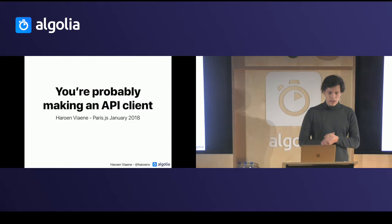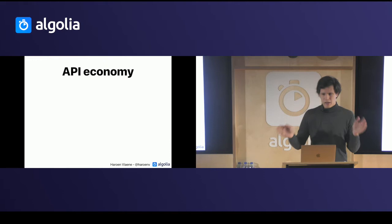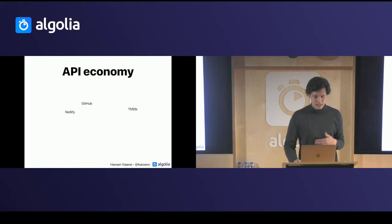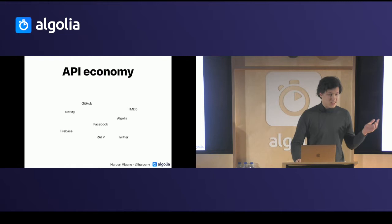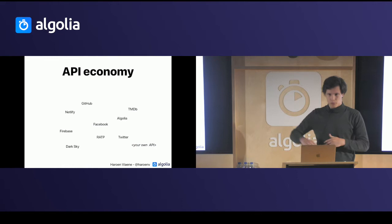While you are working on making a project, you're probably using one and you're probably making one. We're basically in an API economy. Any project that you're making is going to use some APIs — like the GitHub API, the movie database, Netlify, Algolia, Facebook, Firebase, Twitter, RATP, dark sky for weather — and probably your own project also has an API, one for your dashboard, one for your status.